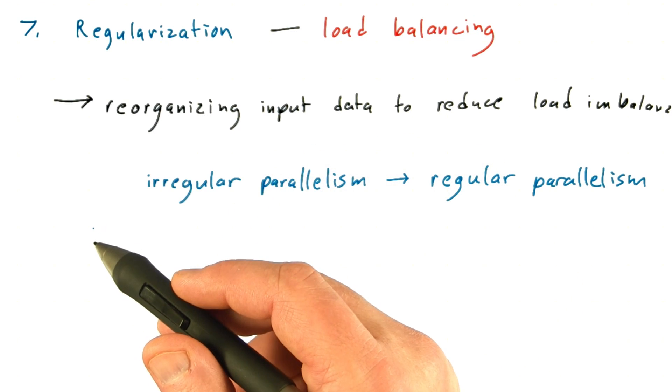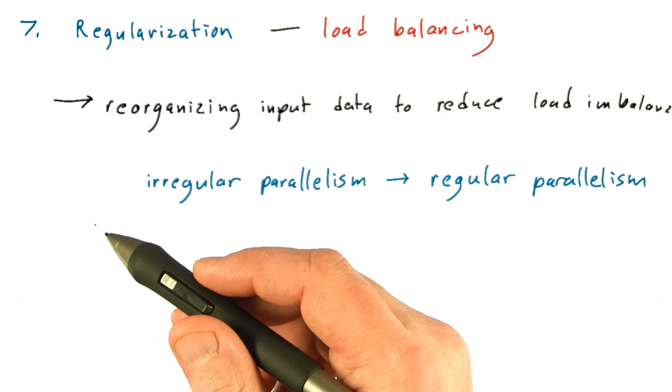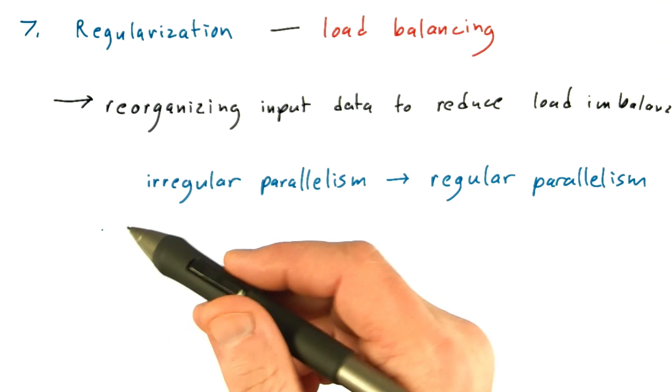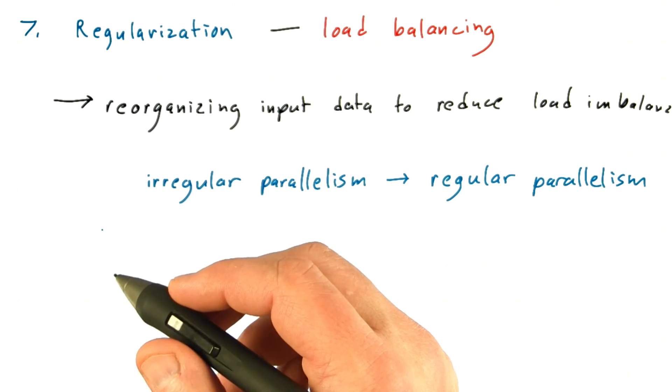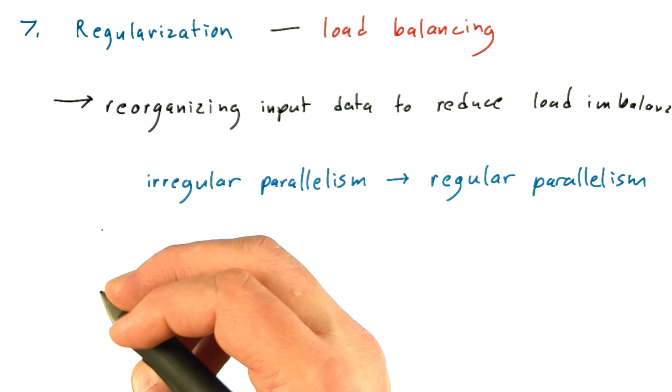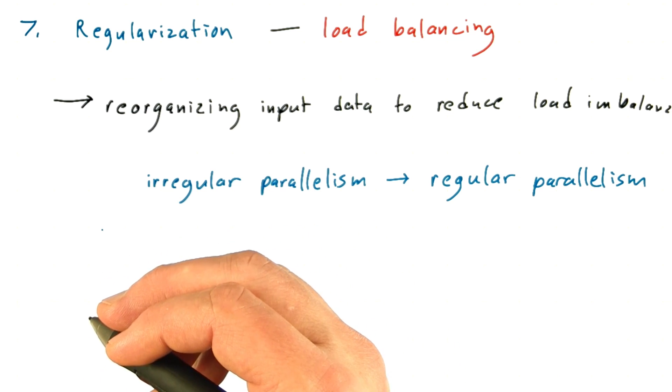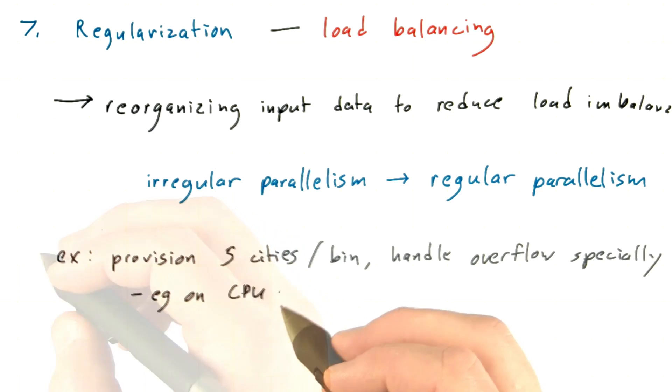For example, in the U.S. cities example that we've been looking at, some bins might contain more cities than the average bin. So you can imagine provisioning each bin to have a fixed number of cities, say five, and then have a special way of handling those relatively few overflow cities.